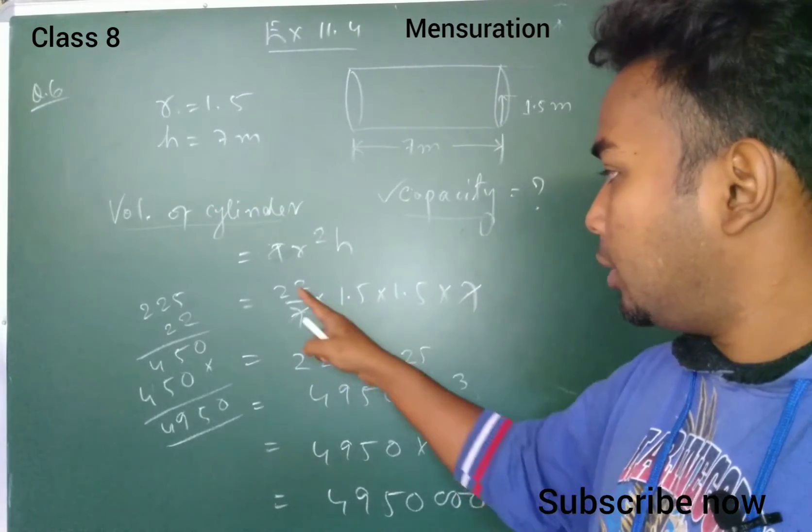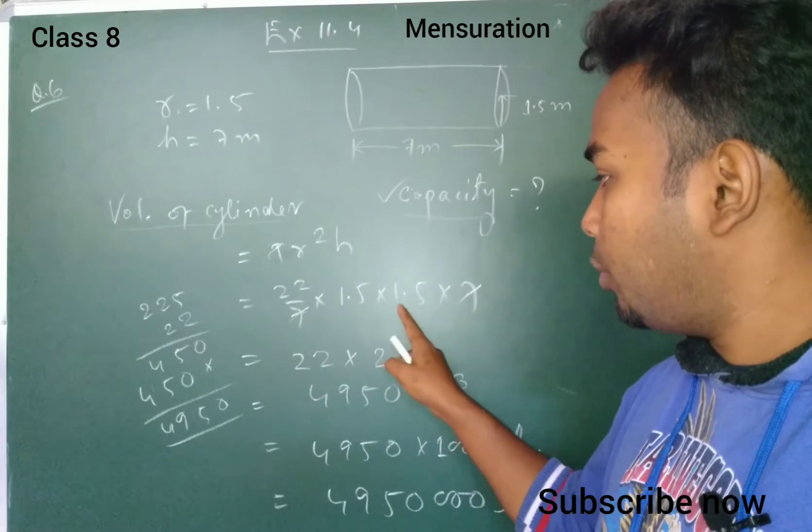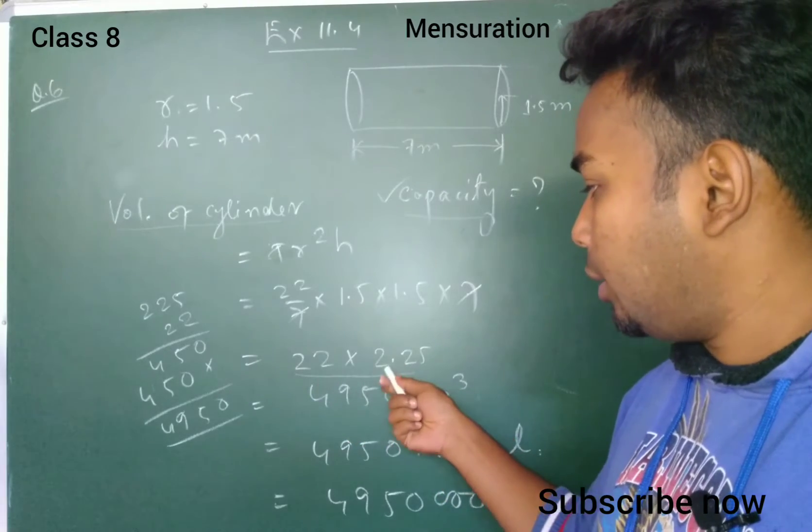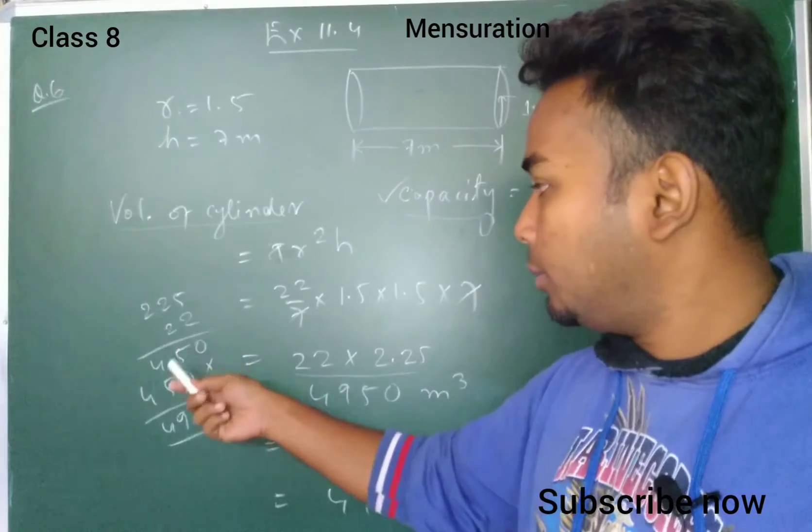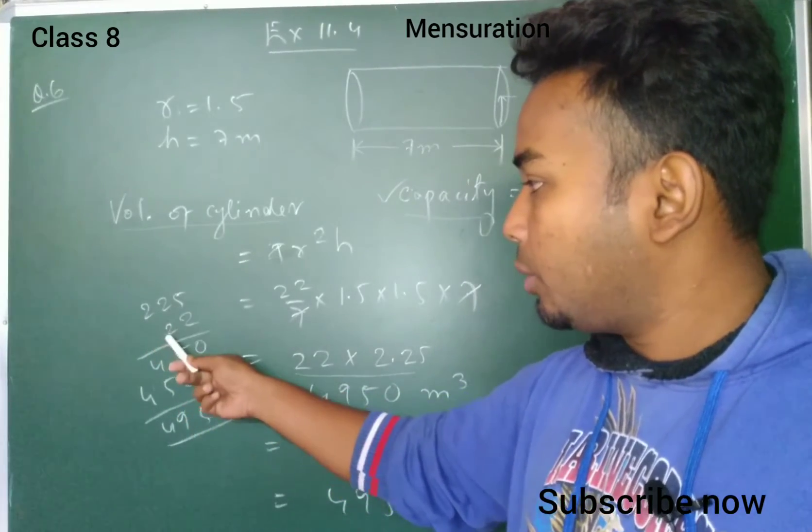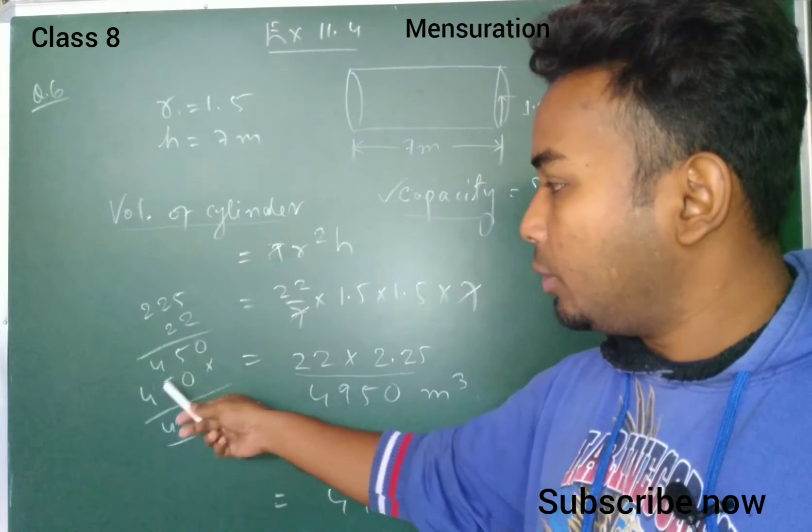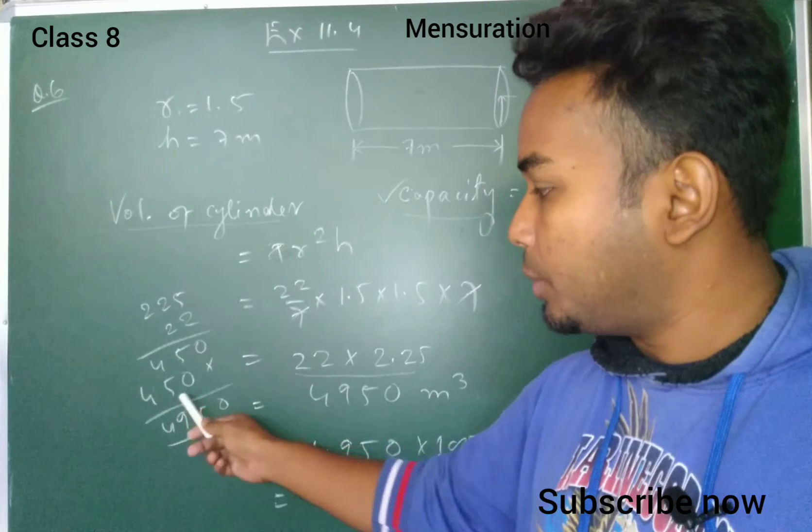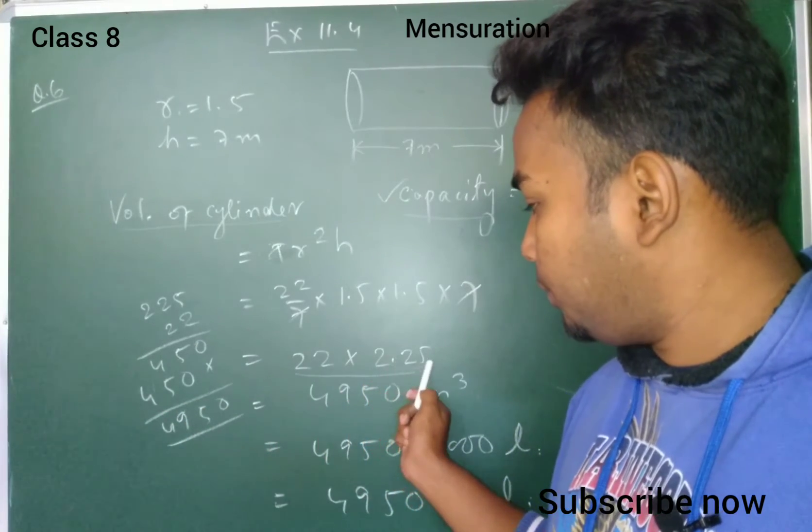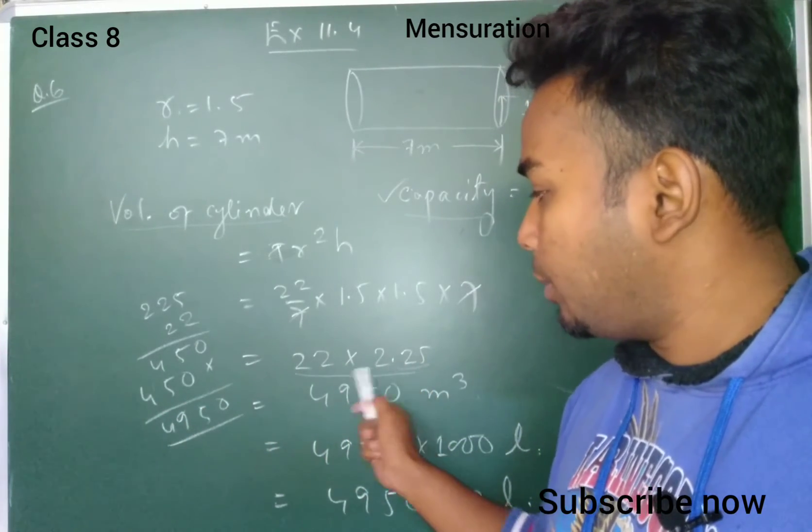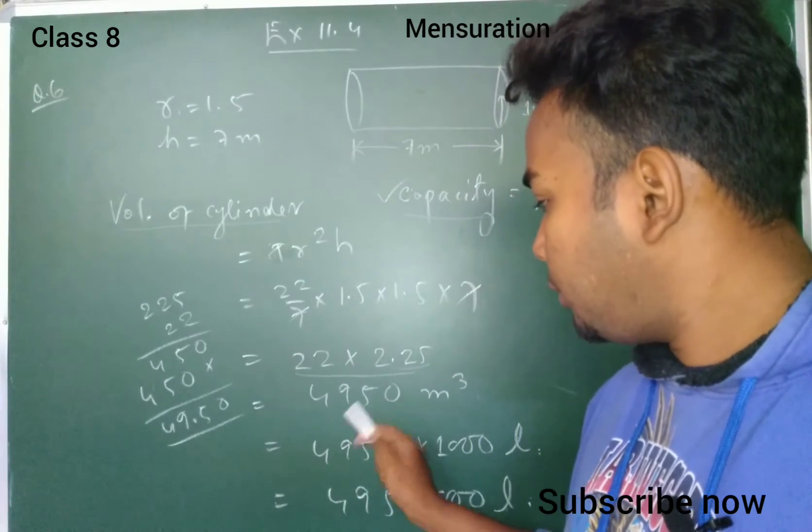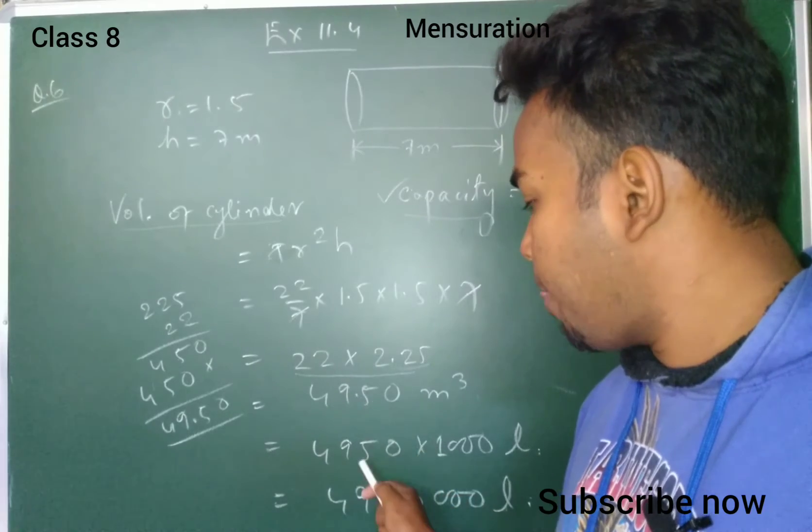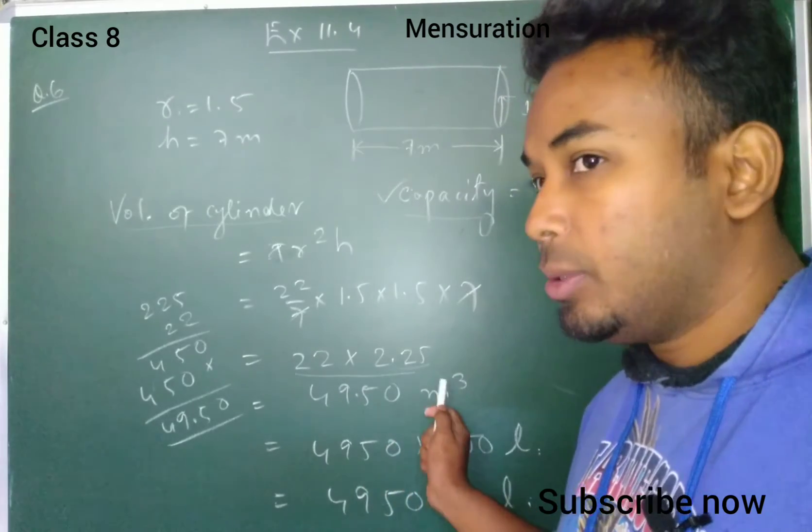Seven and seven cancel. Then 22 remains. 1.5 times 1.5 equals 2.25. After multiplying 22 and 2.25, we get 49.50 meters cubed. This represents the volume.